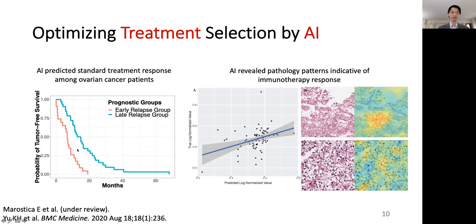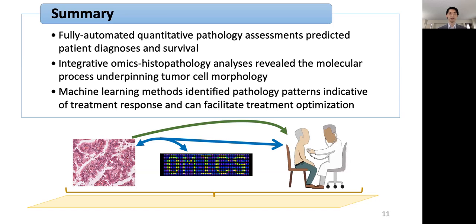In our case, we are able to differentiate patients with early tumor relapse from those with late relapse based on the pathological signatures observed at the time of diagnosis. We further extrapolate our model to predict immunotherapy response and show that certain pathological signatures are indicative of such treatment response. In summary, we show that we can develop a fully automated method to evaluate pathology slides objectively and predict patient diagnosis and survival. We further show that we can incorporate both genomic features and pathology patterns to better understand the molecular processes underlying tumor cell morphology, and our methods can identify pathology patterns indicative of treatment response to facilitate treatment optimization.